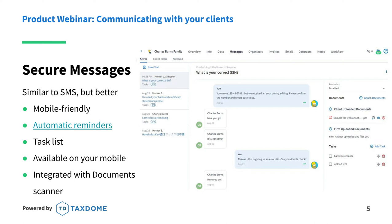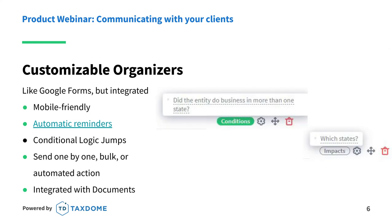Chats are great for quick tasks, but if you need a large amount of information that a message wouldn't cover, that's where customizable organizers come in. If you need to onboard a new client or collect a long list of information, organizers get it all done through one single portal — no sending Google Forms or PDFs from different systems. TaxDome provides a template library of existing organizers you can start with, customize, or build from scratch, asking for whatever information is important to you.